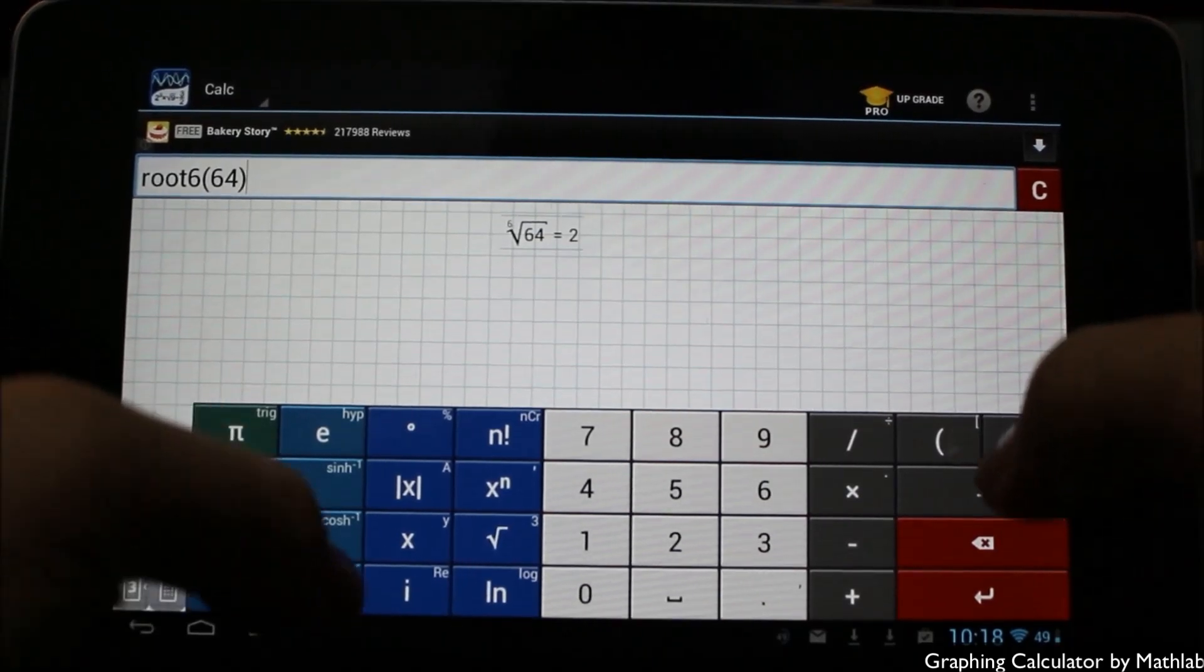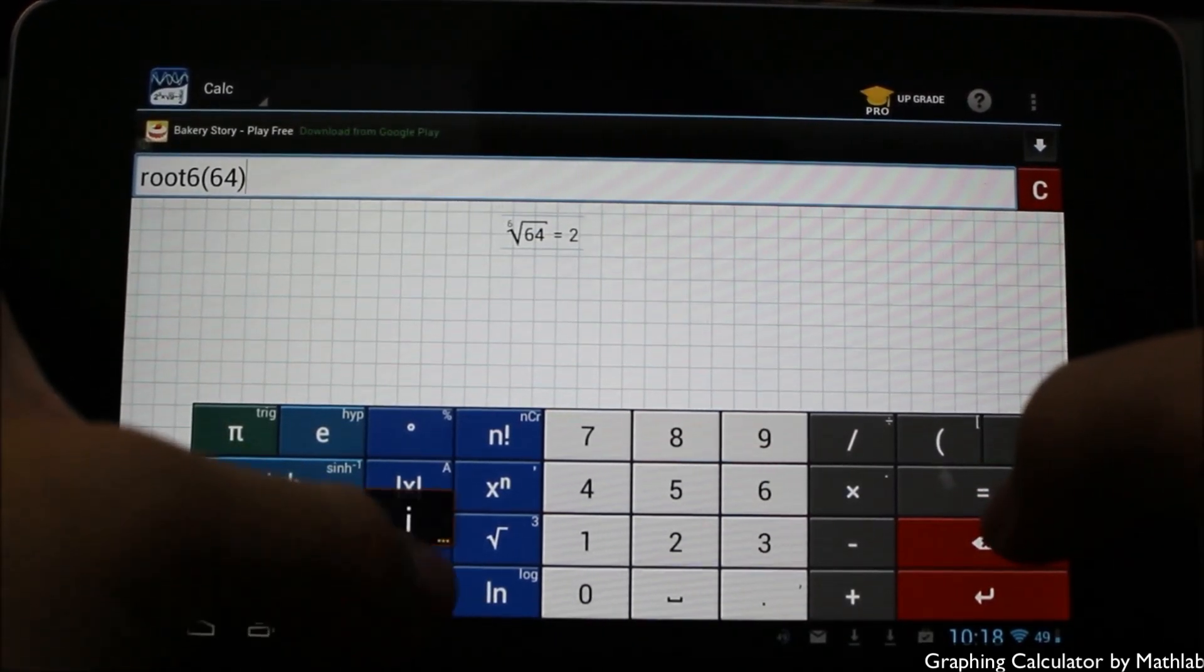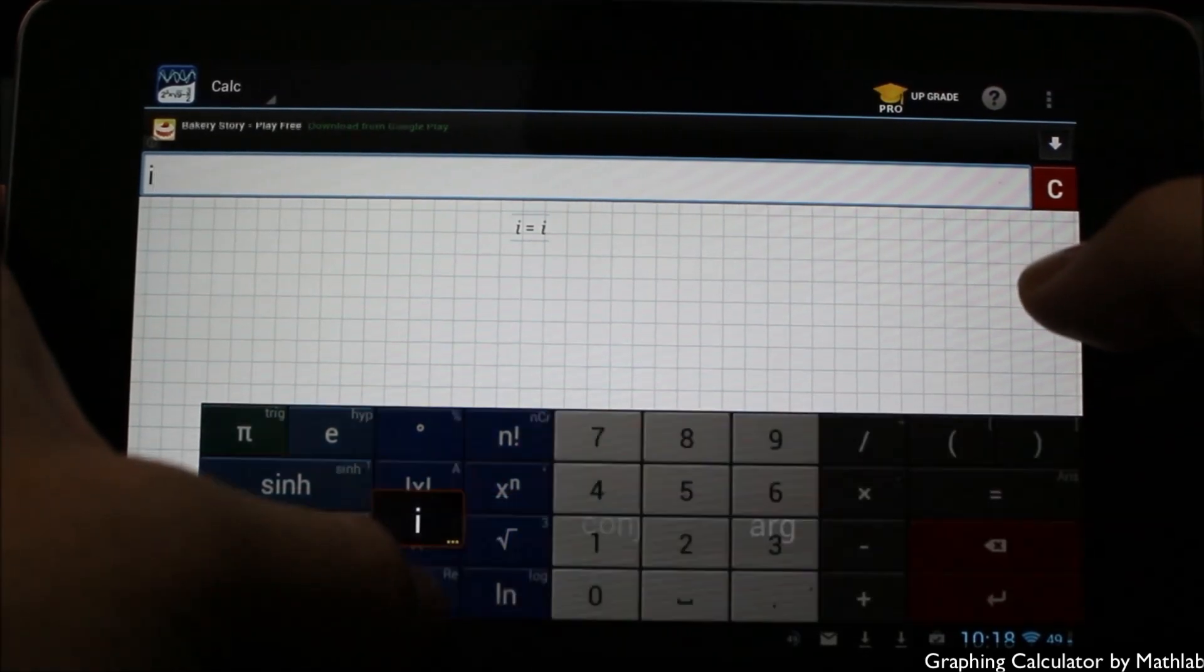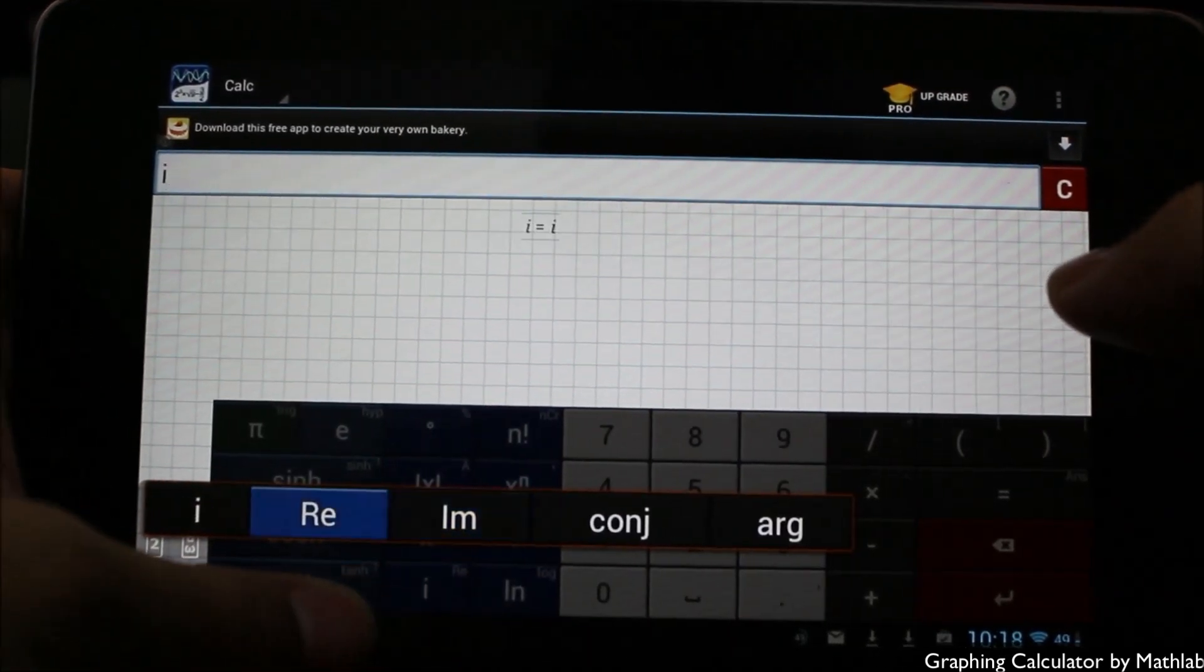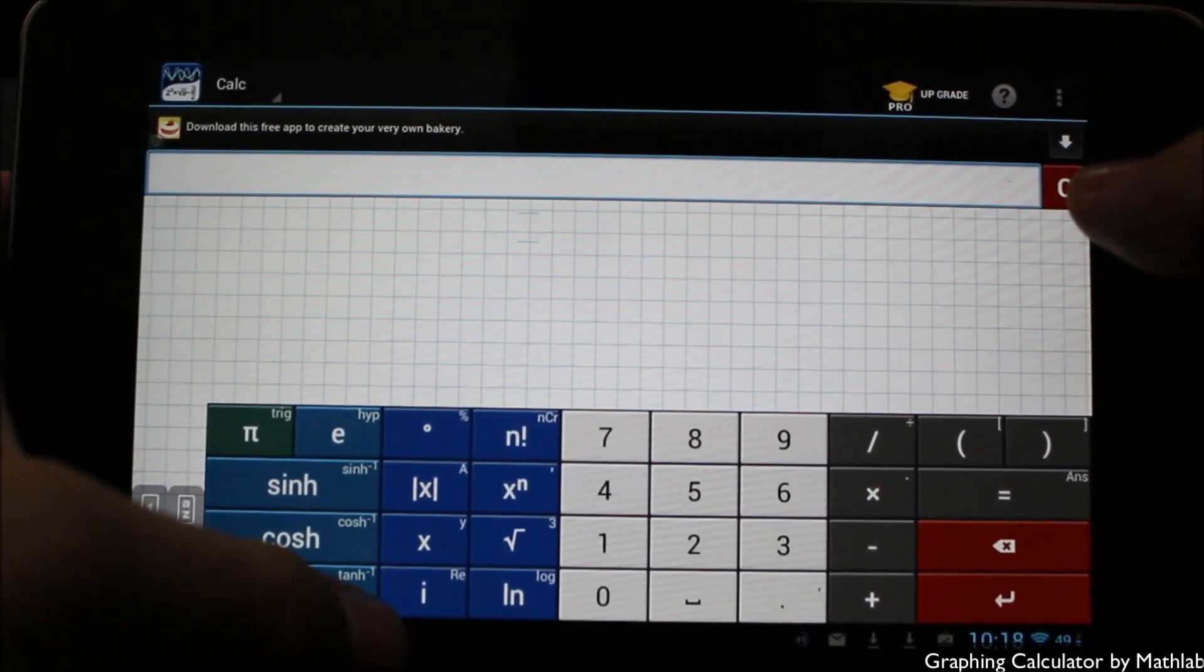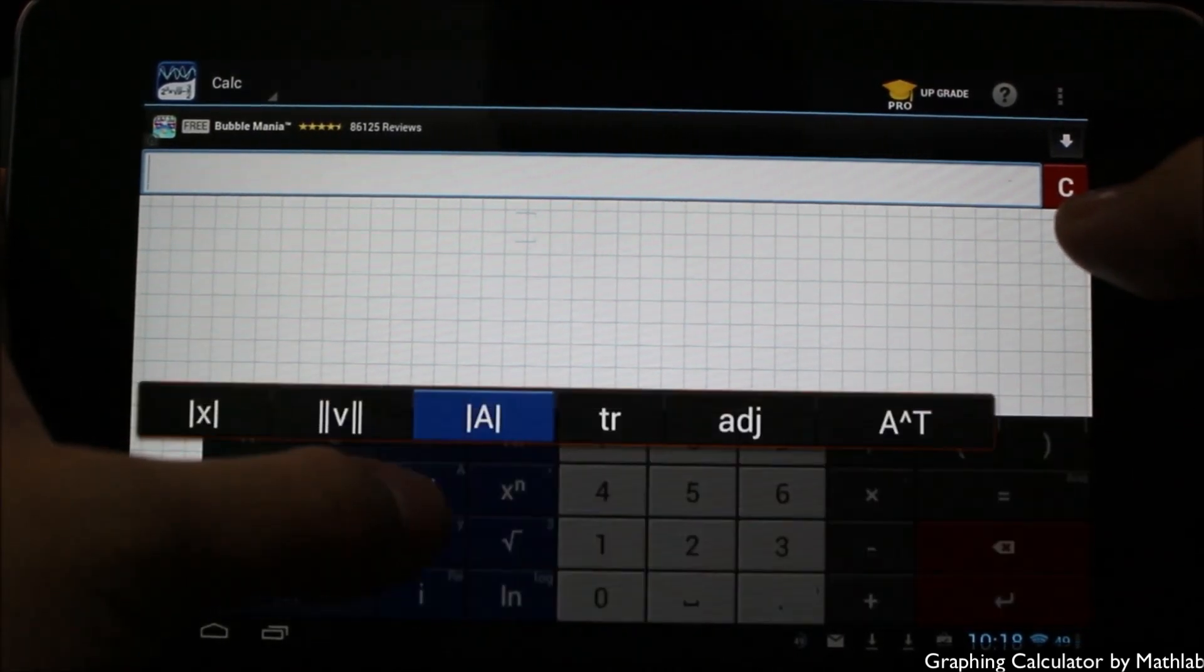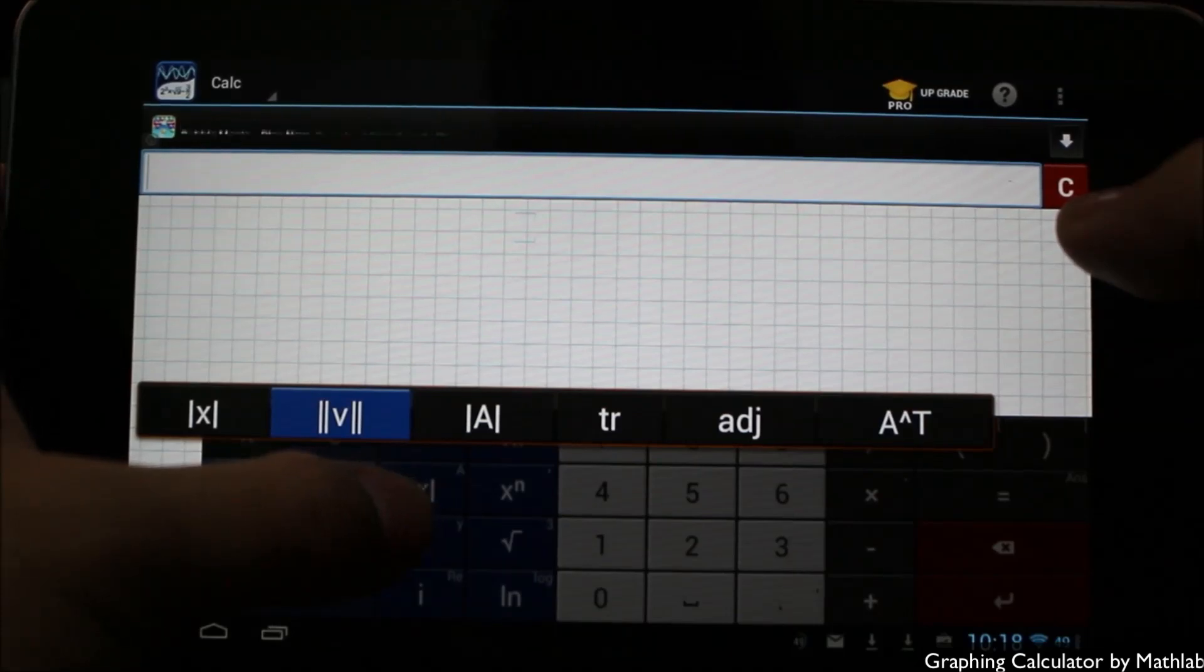Clicking on I here is for entering functions with complex numbers. I'm going to clear that and show that if I hold it down you can see I get some other options available here.